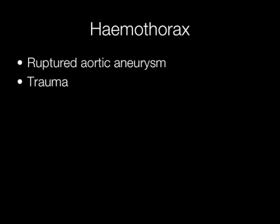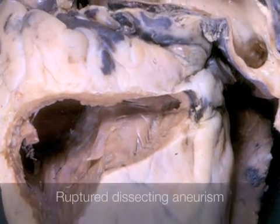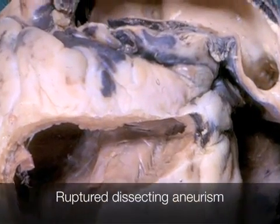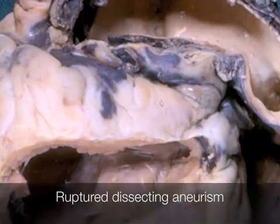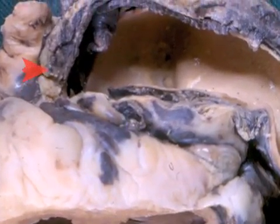Ruptured aortic aneurysms and trauma are the usual causes of haemothorax. This is an example of a ruptured dissecting aneurysm of the ascending aorta.